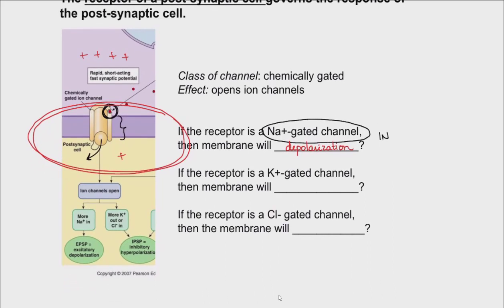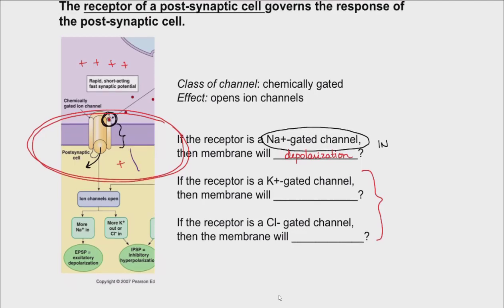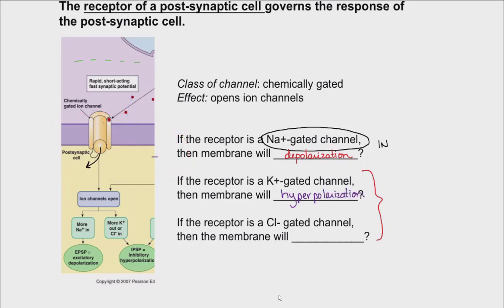What if the receptor is a potassium-gated channel or a chloride-gated channel? If it's a potassium-gated channel, potassium moves out of the cell, taking positive charge with it and making the inside more negative — that causes hyperpolarization. Likewise, if it's a gated chloride channel, chloride moves into the cell bringing more negative charge, which also causes hyperpolarization.